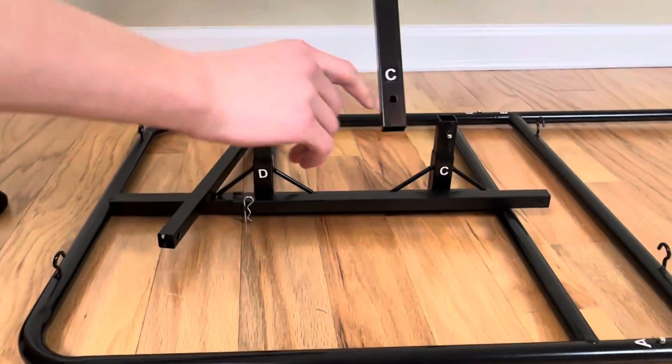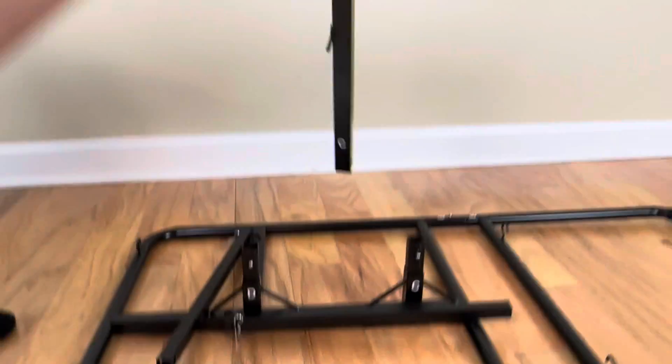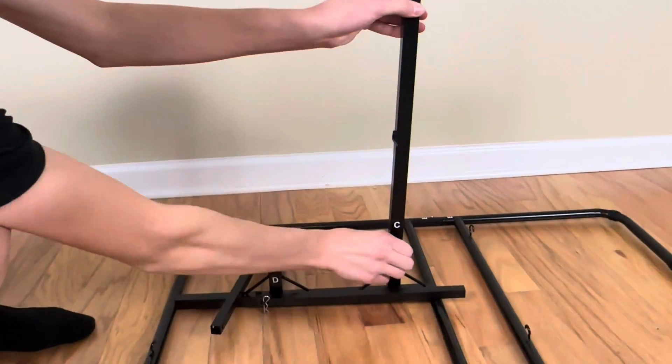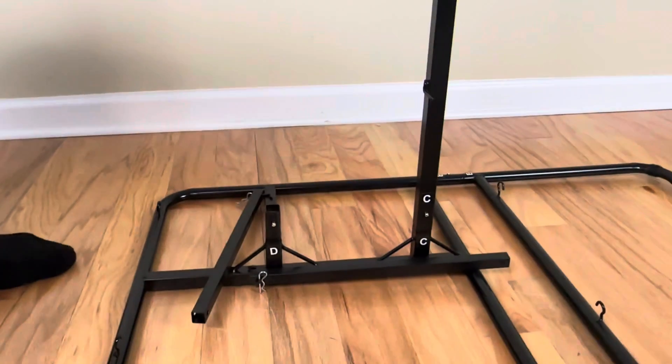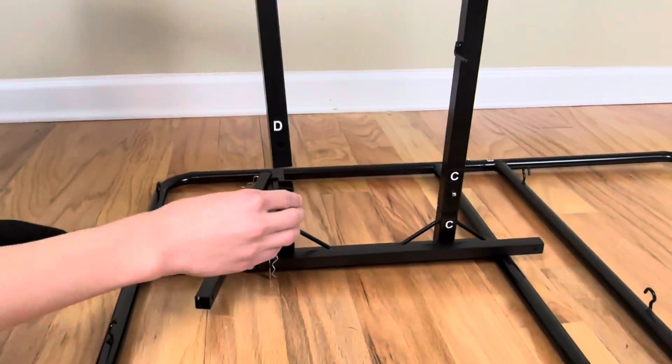Grab the pole labeled C and E and put C to C on the base. Then do D to D.